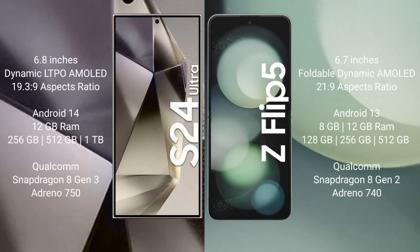Samsung Galaxy S24 Ultra comes with a 6.8-inch Dynamic LTPO AMOLED display. Samsung Galaxy Z Flip 5 comes with a 6.7-inch foldable Dynamic AMOLED display.